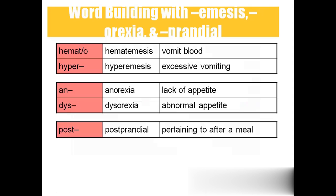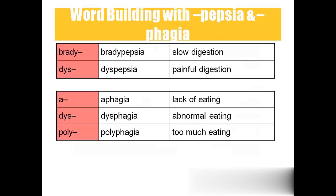More terms: hematemesis is blood vomiting (hemato = blood, emesis = vomiting); hyperemesis is excessive vomiting; anorexia is lack of appetite; dysorexia is abnormal appetite; post-prandial means after the meal; bradypepsia is slow digestion; dyspepsia is abnormal or painful digestion; aphasia is lack of eating; dysphasia is abnormal eating; polyphagia is too much eating.